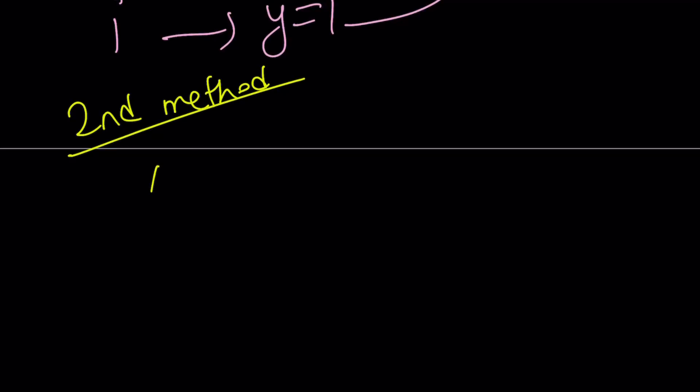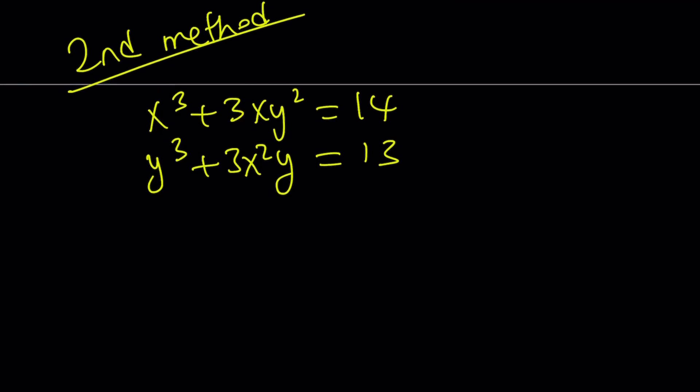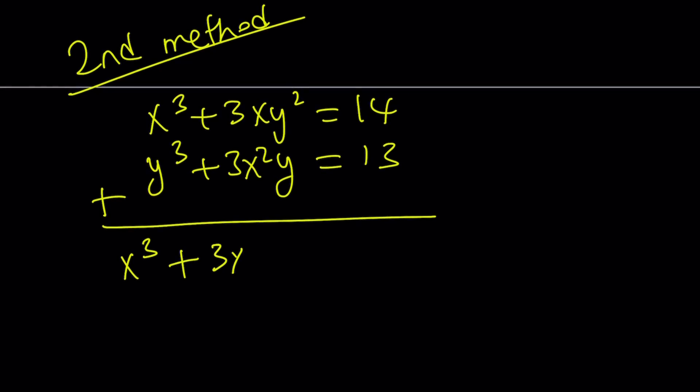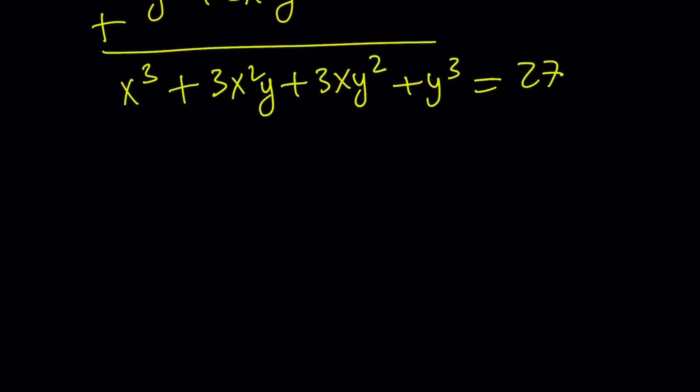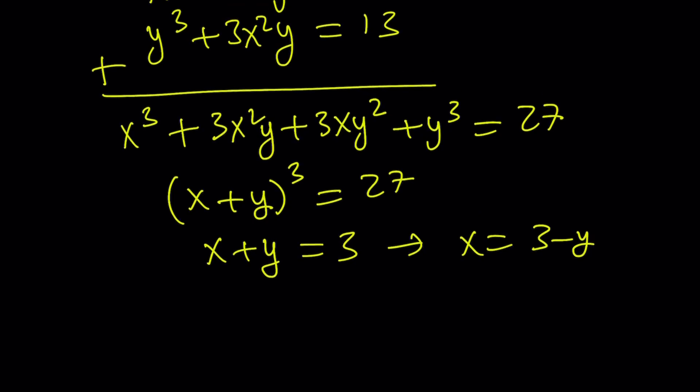All right, great. Second method is very different, and it's actually very nice. And I'm pretty sure most of you went with the second method. So here's how the second method works. We're going to be adding these two equations. x cubed plus 3x squared y plus 3xy squared plus y cubed equals 27. And the left-hand side just happens to be x plus y to the third power. Yay, awesome. Now, if you cube root both sides, you get x plus y is equal to 3. And from here, you can do whatever you want, like you can replace x with 3 minus y or y with 3 minus x in one of these equations, and you'll get the answer.